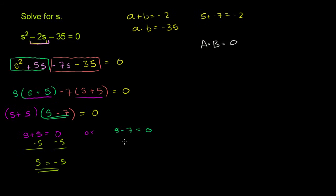Or you have, let's see, you can add 7 to both sides of that equation. And you get s is equal to 7. So if s is equal to negative 5, or s is equal to 7, then we have satisfied this equation.